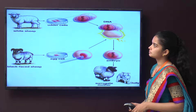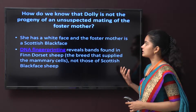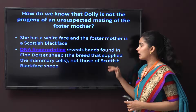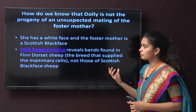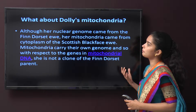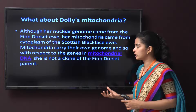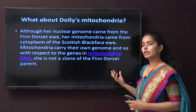How do we know Dolly is not the offspring of unsuspected mating with the foster mother? Dolly has a white face while the foster mother is a Scottish Blackface sheep. DNA fingerprinting reveals that the bands found in the Finn Dorset sheep — the breed that supplied the mammary cells — do not match the Scottish Blackface sheep. As for Dolly's mitochondria: although her nuclear genome came from the Finn Dorset ewe, her mitochondria came from the cytoplasm of the Scottish Blackface ewe. Since mitochondria carry their own genome, Dolly is not a complete clone of the Finn Dorset parent with respect to mitochondrial DNA.